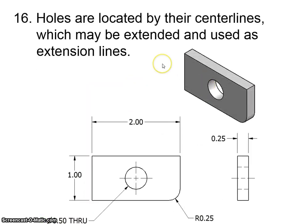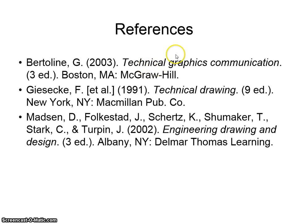Rule 16, holes are located by their center lines and they may be extended and used as extension lines. So you see these are center lines on this hole. There's a center line over here as well. These can be and should be used as extension lines to dimension the hole to show where it's supposed to be. You're supposed to locate the center of the hole so the producer of the part knows where to locate it. So it's an error to not locate the center of a hole. Okay, and there's your references at the end of the PowerPoint.